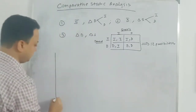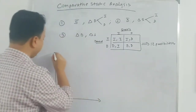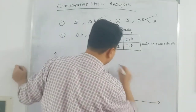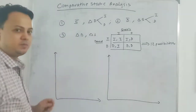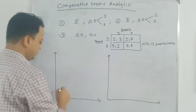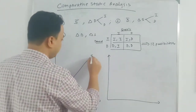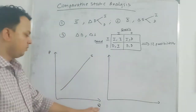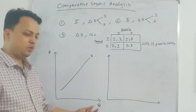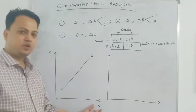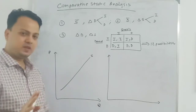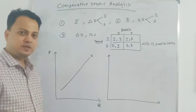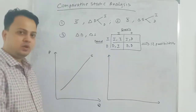We start by keeping the supply curve the same, beginning from the initial equilibrium. Let me draw both axes — price on the vertical axis and Q (quantity) on the horizontal axis. Q can be quantity of output or quantity of labour, so we can consider either a factor market or a product market, since prices in a competitive market are determined through demand and supply.